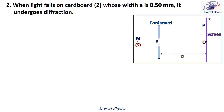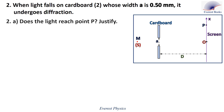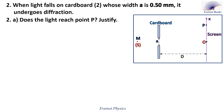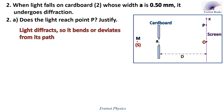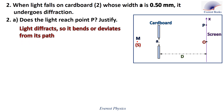Part two: when light falls on cardboard two, whose slit width A is 0.5 millimeters, it undergoes diffraction. Part 2A: does the light reach point B? Since the light undergoes diffraction at the slit, it bends or deviates from its path, and therefore it can reach point B.